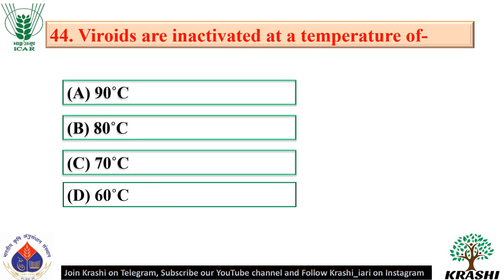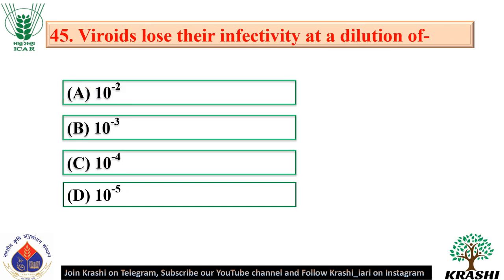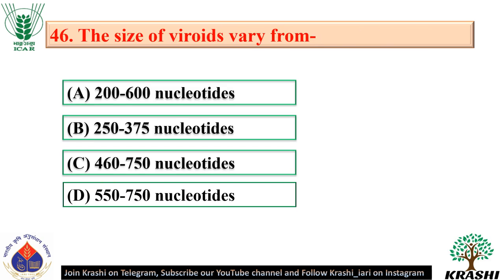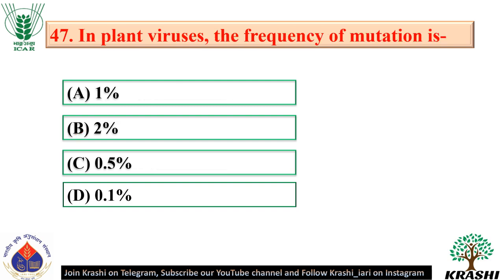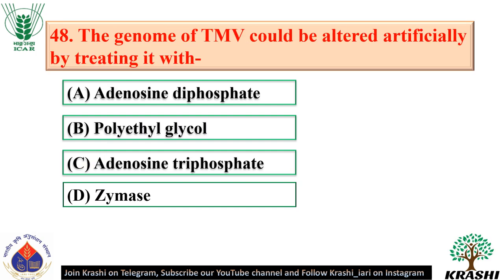Question number 44: Viroids are inactivated at a temperature of 90°C — option A. Question number 45: Viroids lose their infectivity at a dilution of 10⁻⁵. Question number 46: The size of viroids varies from 250 to 375 nucleotides — option B. Question number 47: In plant viruses, the frequency of mutation is 0.5% — option C.